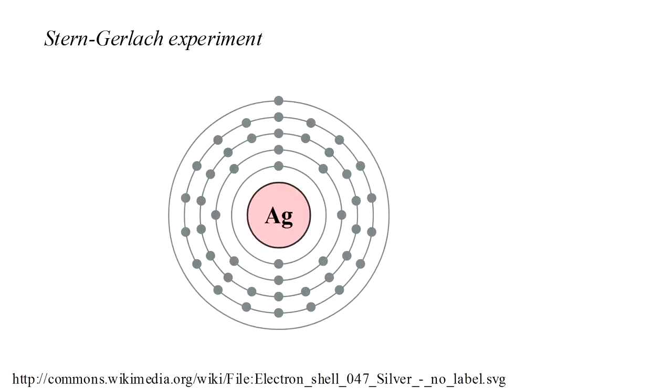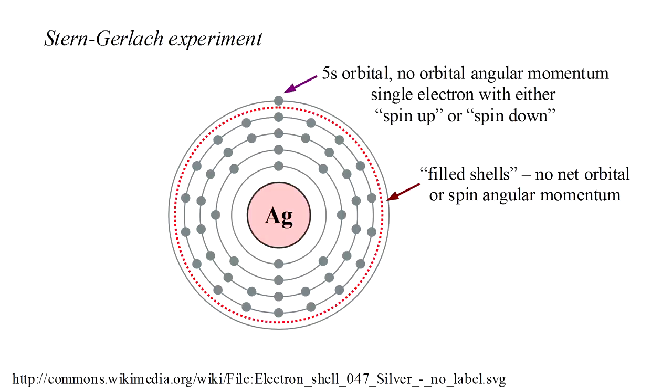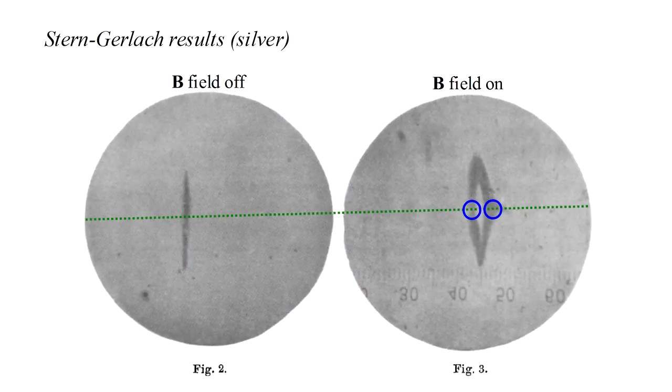With 47 electrons, the silver atoms used in the Stern-Gerlach experiment are more complicated. It turns out that 46 of them are arranged in so-called filled shells, which have no net orbital or spin angular momentum. So this leaves a lone electron in a 5s orbital, which, like the hydrogen electron, has no orbital angular momentum, but does have spin angular momentum. The two components of this lead to the two spots seen in the Stern-Gerlach experiment.